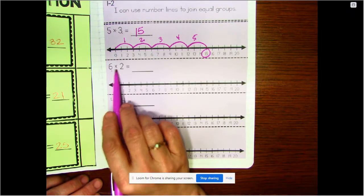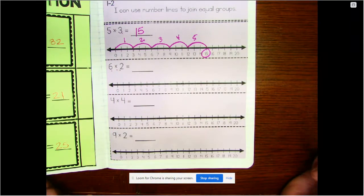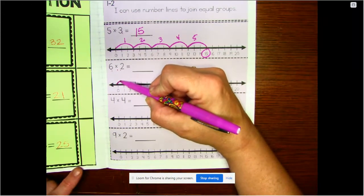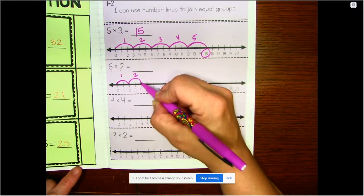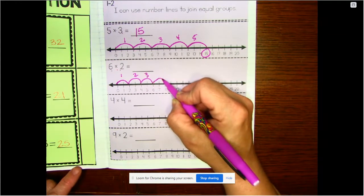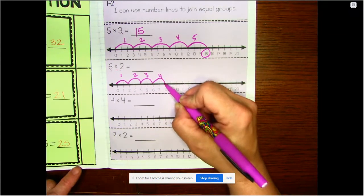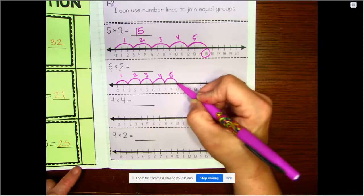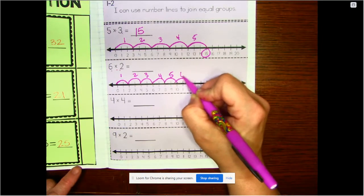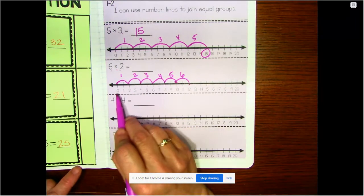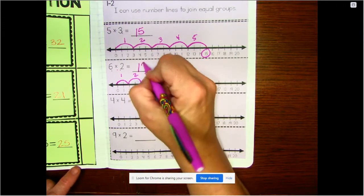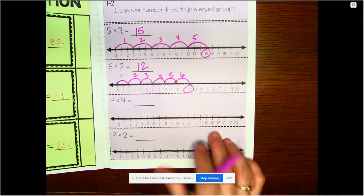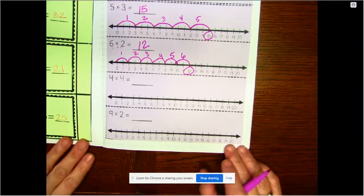The next one says, six groups of two. So our jumps are going to be two. And how many we're going to do is six. So, one, two, three, four, five, six. The jump sizes are two. And I did it six times. And that lands me at 12.